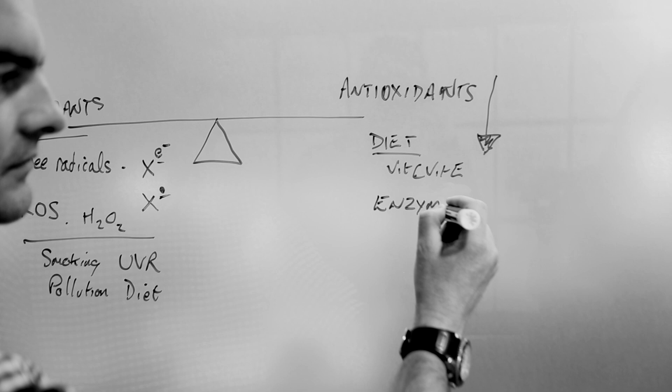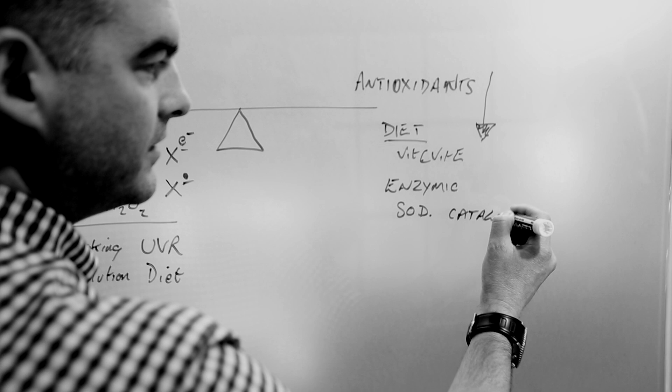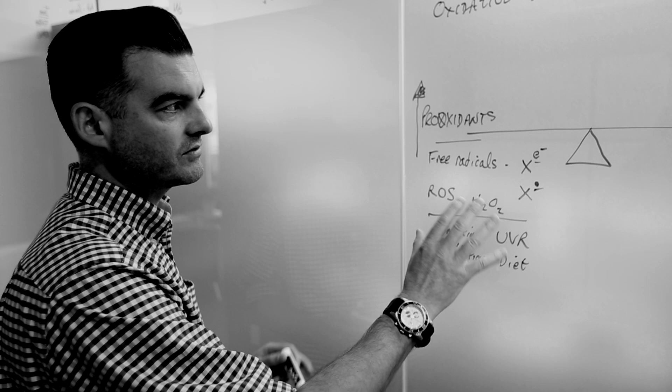are also enzymatic antioxidants inside the body, inside the cell, things like superoxide dismutase and catalase. So you have this balance between the two, and greater exposure to pro-oxidants, if not balanced out by antioxidants, will lead to oxidative stress.